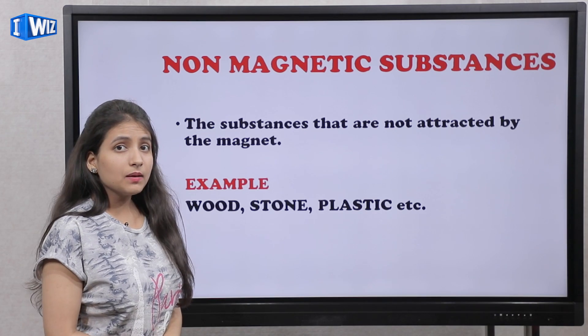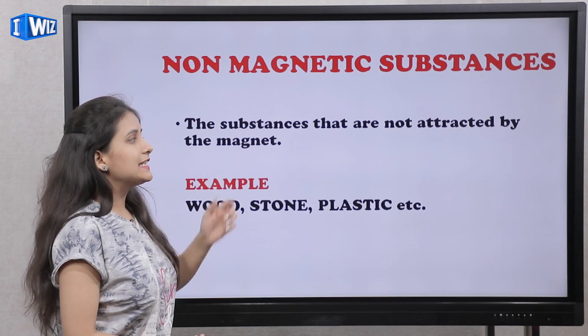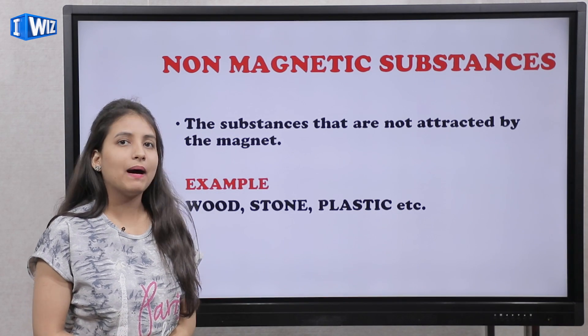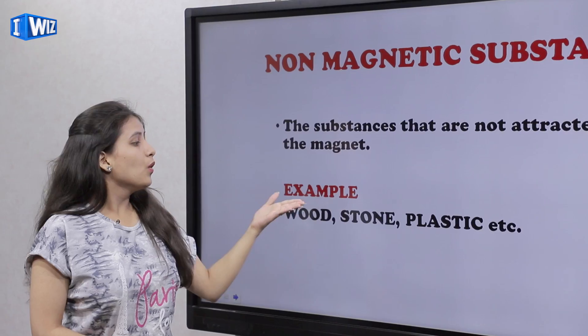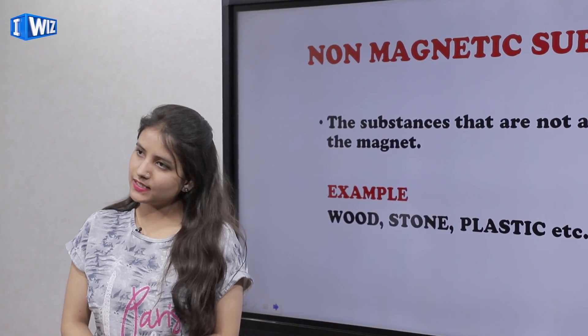Non-magnetic substances are the substances that are not attracted by the magnet. For example, wood, stone, plastic, etc.